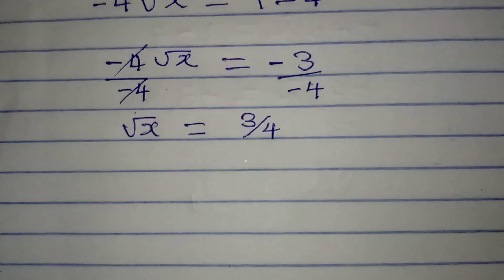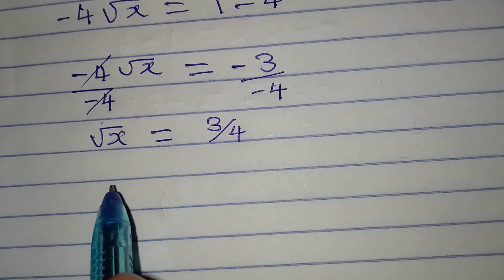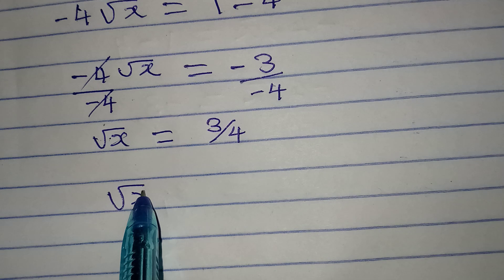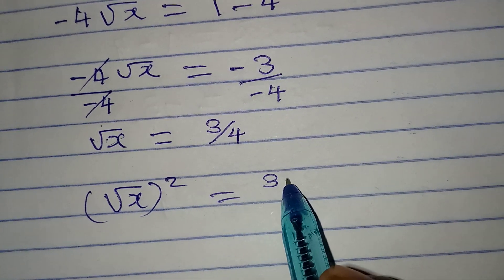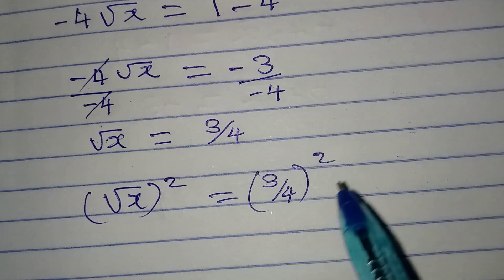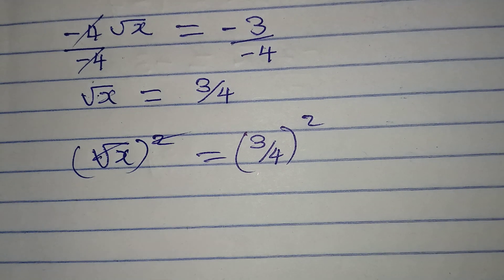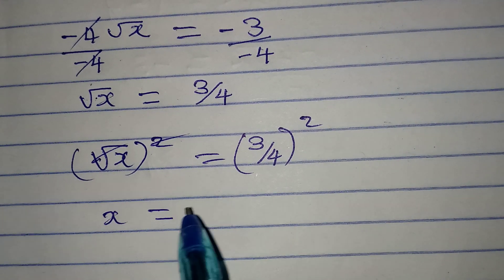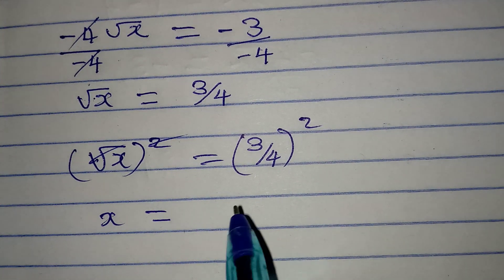The next step is to remove this square root by squaring both sides again. I have 3 over 4 squared on the right. The square root and square cancel on the left, so x equals 3 over 4 squared.